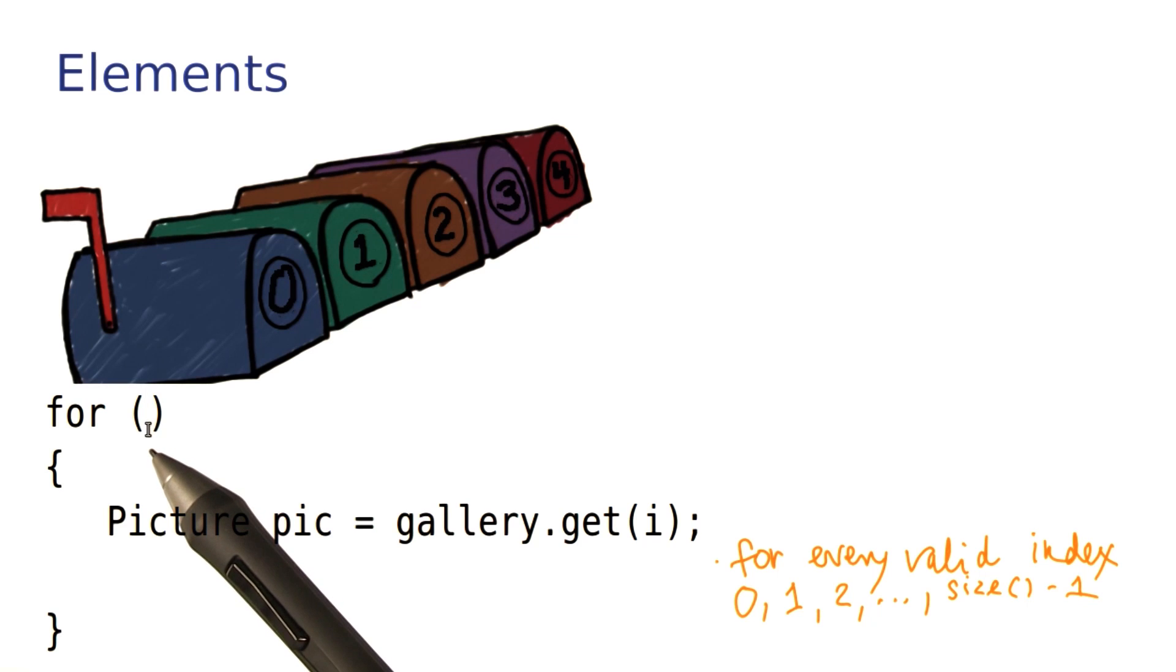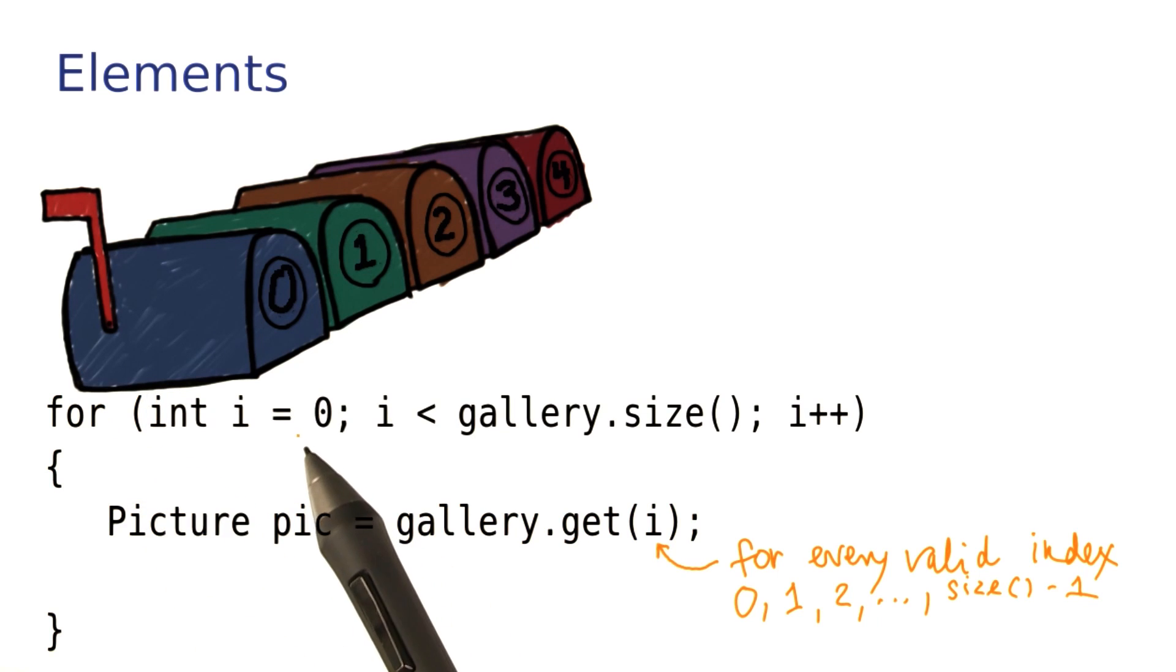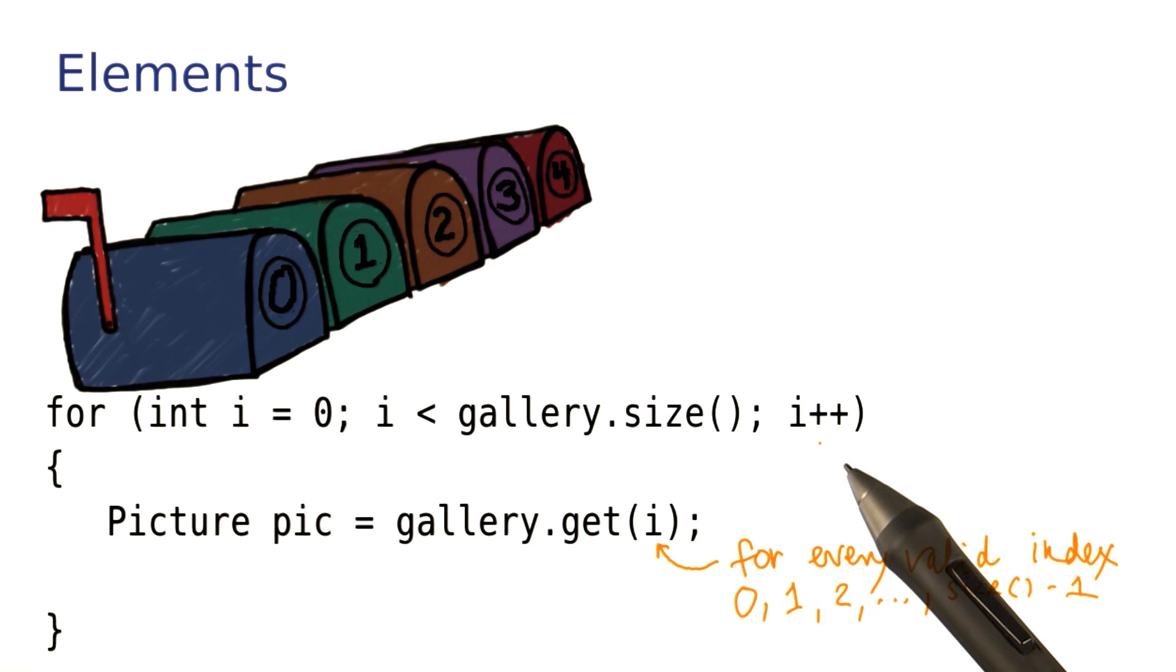So here's what we need to put into our for loop. i starts at 0. It gets incremented at every step, and we stay in the loop while i is less than the size of the ArrayList.